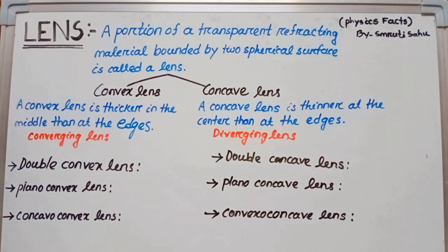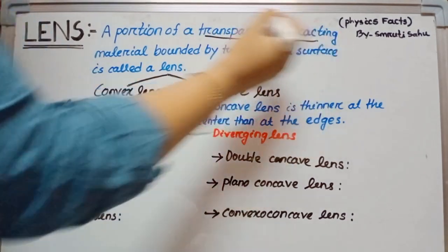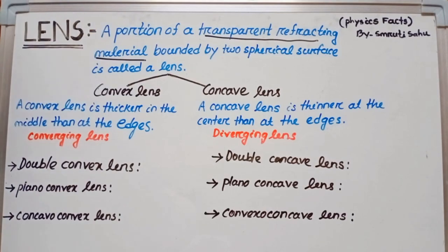So students, first, what is a lens? A portion of a transparent refracting material — that is, a material which is bounded by two spherical surfaces, or maybe one plane surface and one spherical surface — is called a lens. Here, refraction takes place.